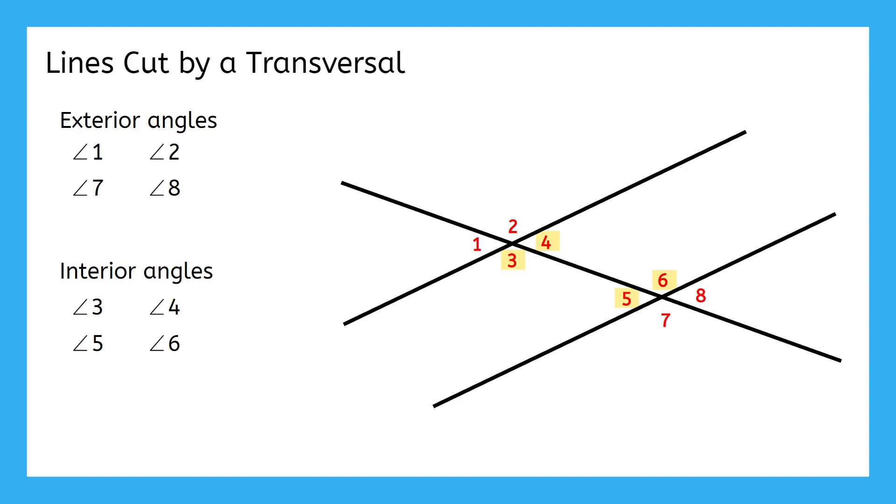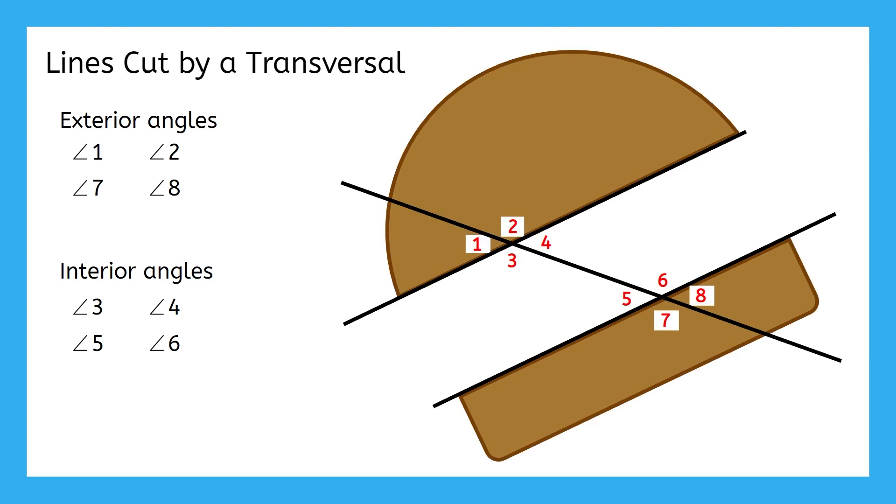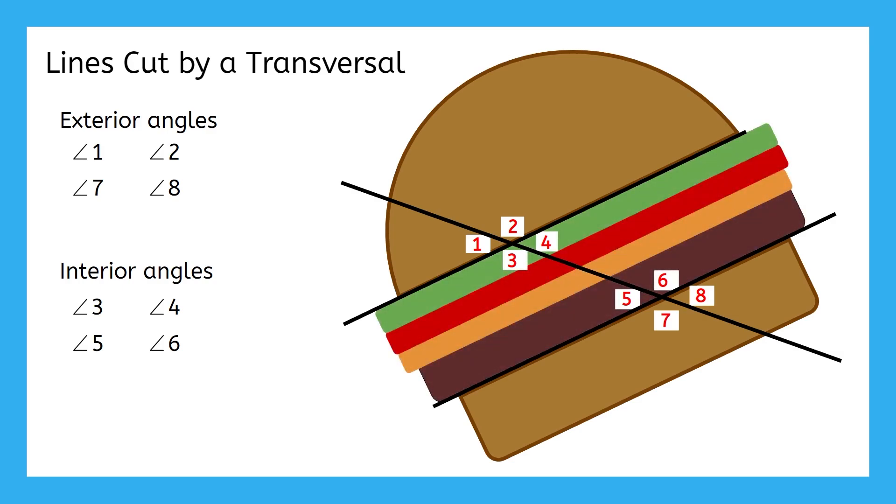If this is a little tricky for you to visualize the inside and outside of this diagram, that's okay. This is a new concept and it'll take some practice to get used to it. One trick that you might want to use is to think of our diagram like a sandwich. My favorite sandwich is a cheeseburger, so that's what I'll use. Each of the non-transversal lines creates the buns, and these represent the exterior. In between the non-transversal lines is all the good stuff. The patty, the cheese, maybe some lettuce, tomato, a little ketchup. All these meat and toppings are the interior of the sandwich.